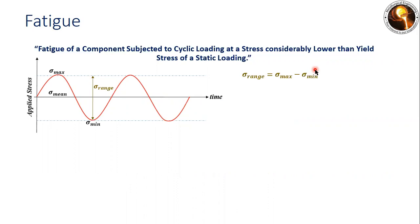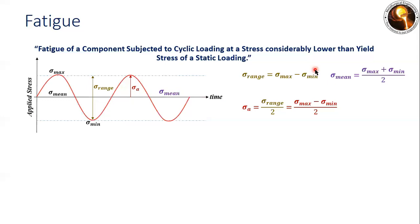The cyclic loading is defined by the range of stress, which lies between sigma max and sigma min — it is the difference of the maximum stress and minimum stress. Another important parameter is stress amplitude, sigma a, which is half the range of stress: (sigma max minus sigma min) divided by two. Mean stress is the average of maximum and minimum stress: (sigma max plus sigma min) divided by two.